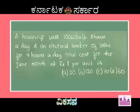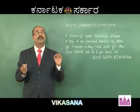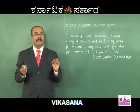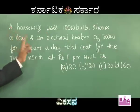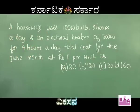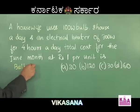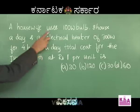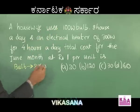Dear students, this is based on costing of electrical connections. The housewife uses a 100 watt bulb for 8 hours a day. That means the usage for the bulb per day is 100 watt × 8 hours = 800 watt-hours per day.